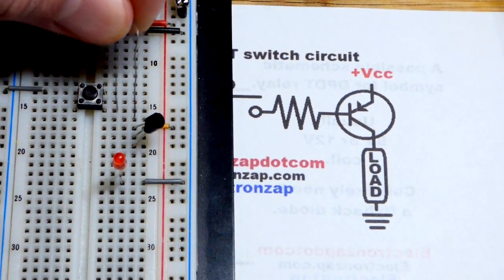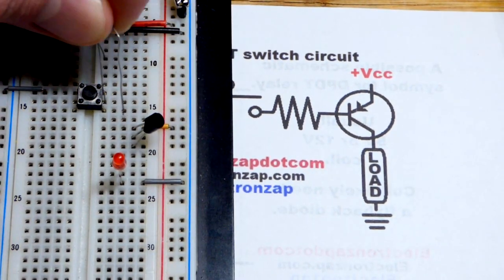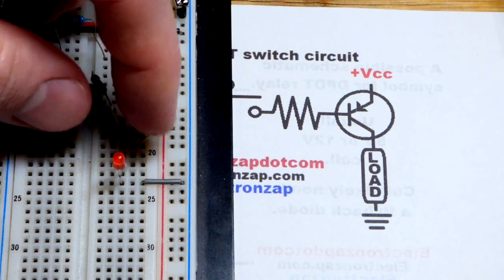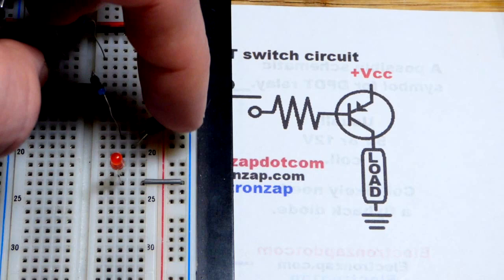Let's zoom back a little bit. So the base, or one side of the switch, to the base, right there, middle pin. Now we've got the collector down below.